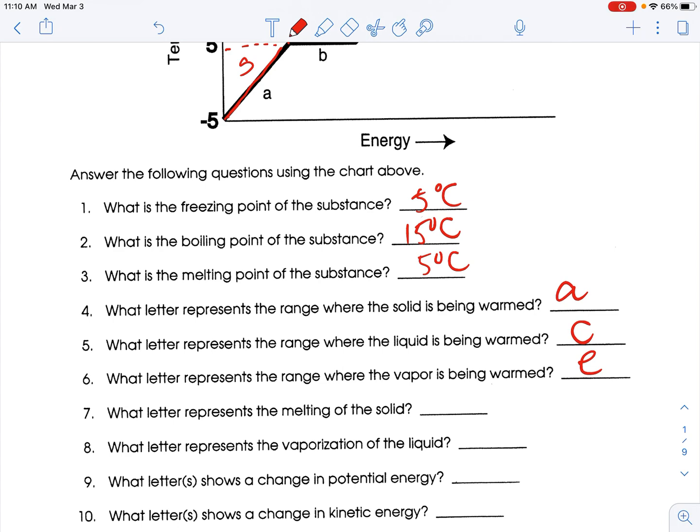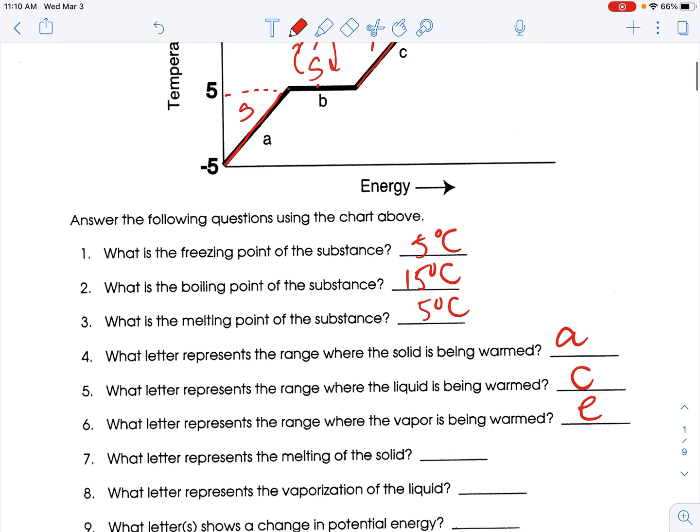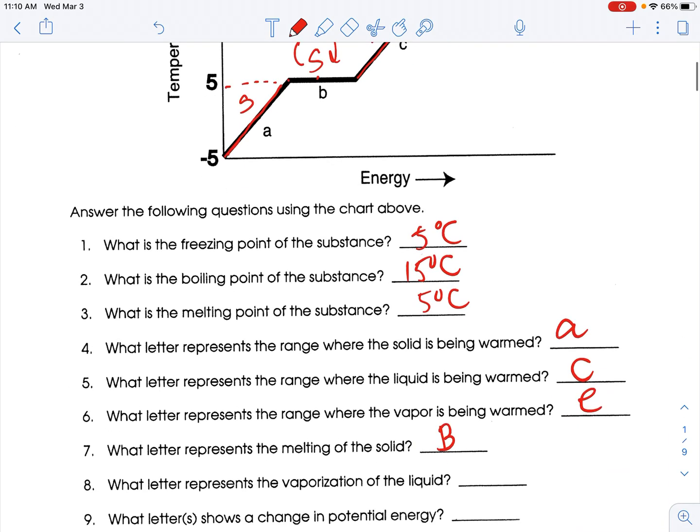What letter represents melting of a solid? Melting would be B. What letter represents vaporization of a liquid? That means turning a liquid to a gas. That would be D.